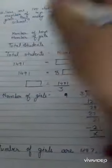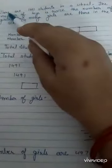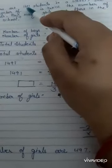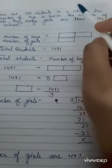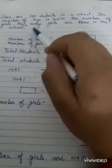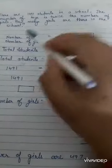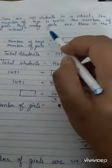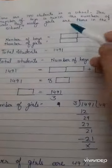Question number two of the word problem is: there are 1491 students in a school, the number of boys is twice the number of girls, how many girls are there in the school? Yesterday I told you about the twice and three times concept.